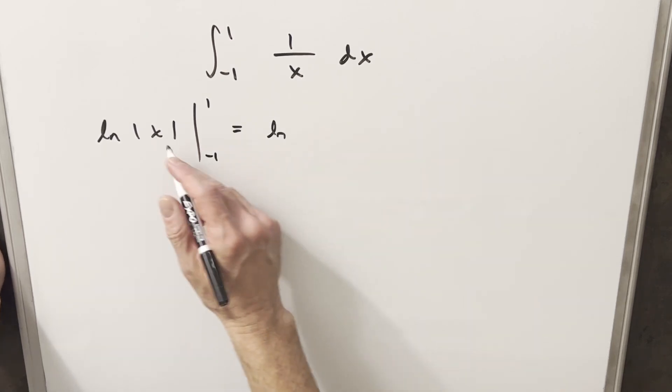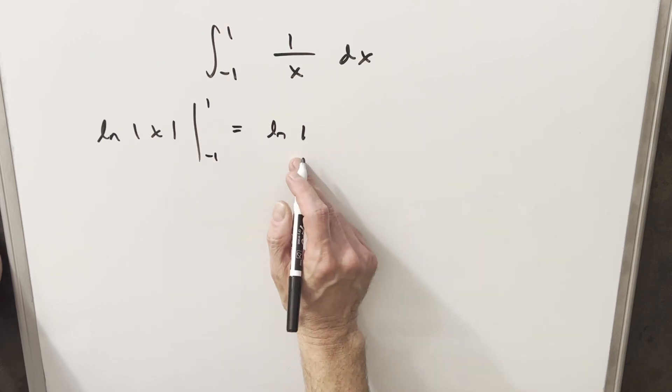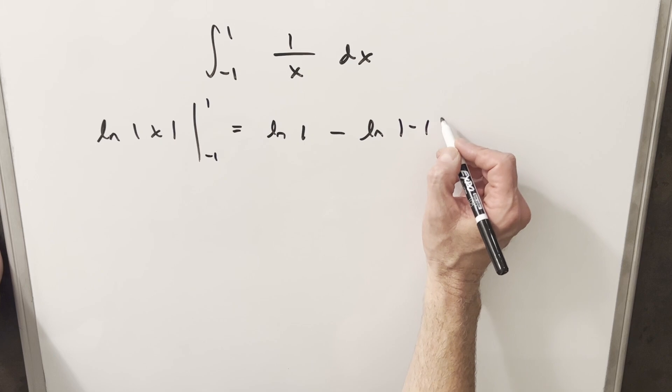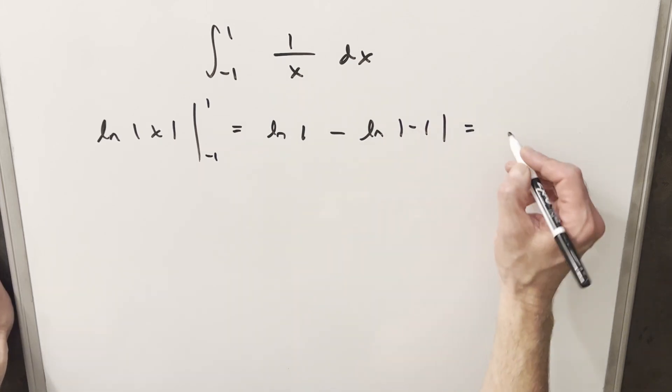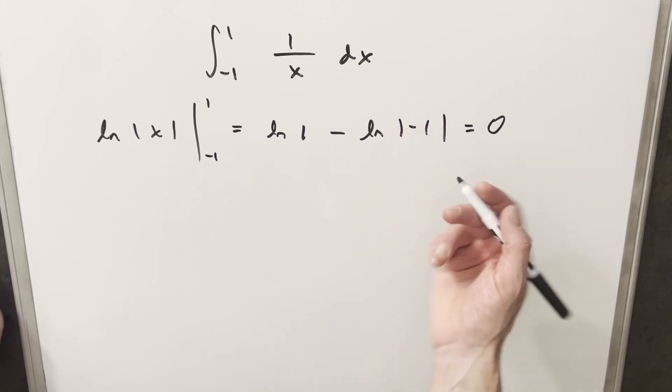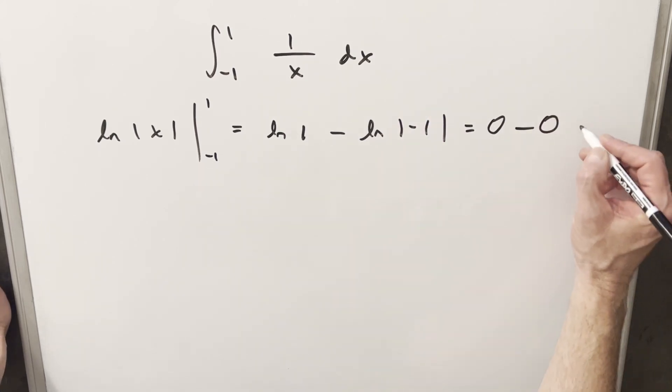So plugging in, we have natural log absolute value isn't doing anything here. So we're going to have just natural log of 1 minus natural log absolute value minus 1. And natural log of 1 is just 0. The absolute value here is going to change this to natural log of 1. So this is also 0, 0 minus 0. And so we have a solution of just 0.